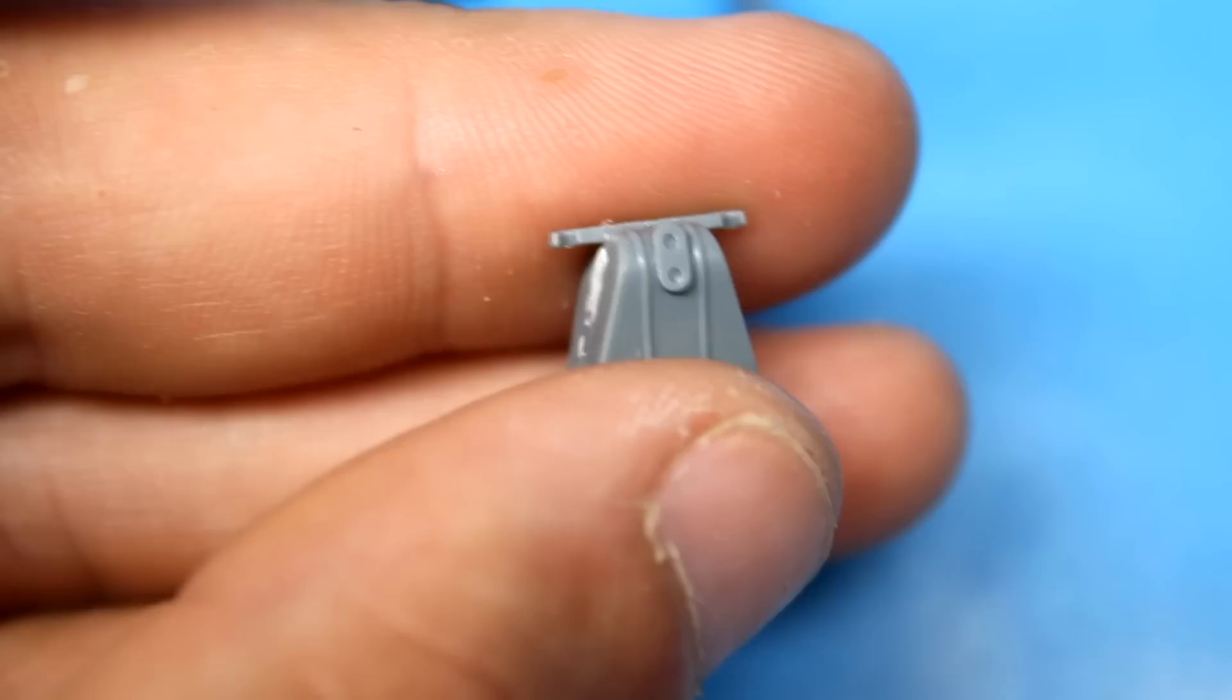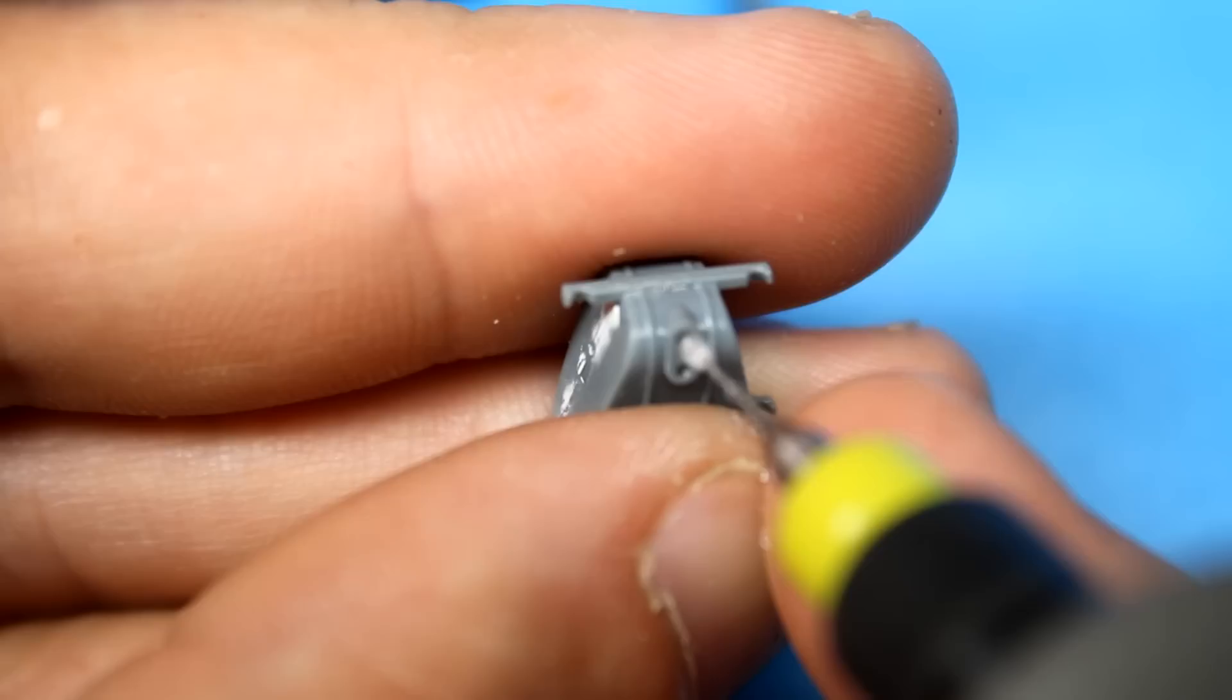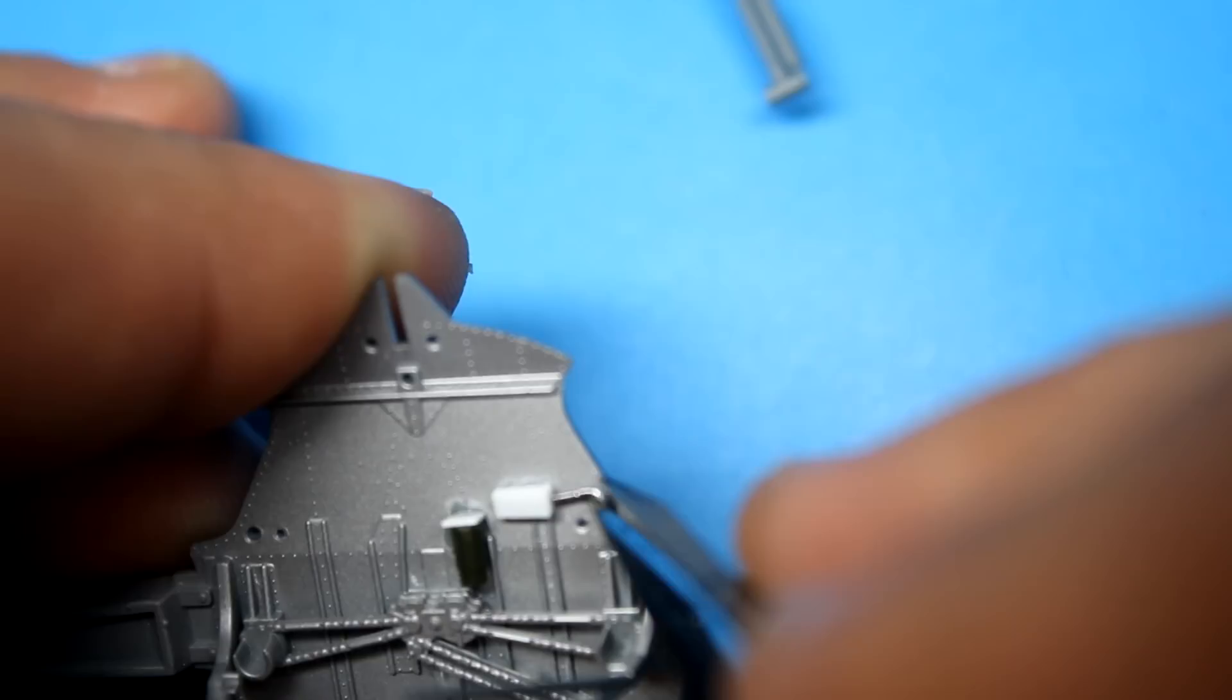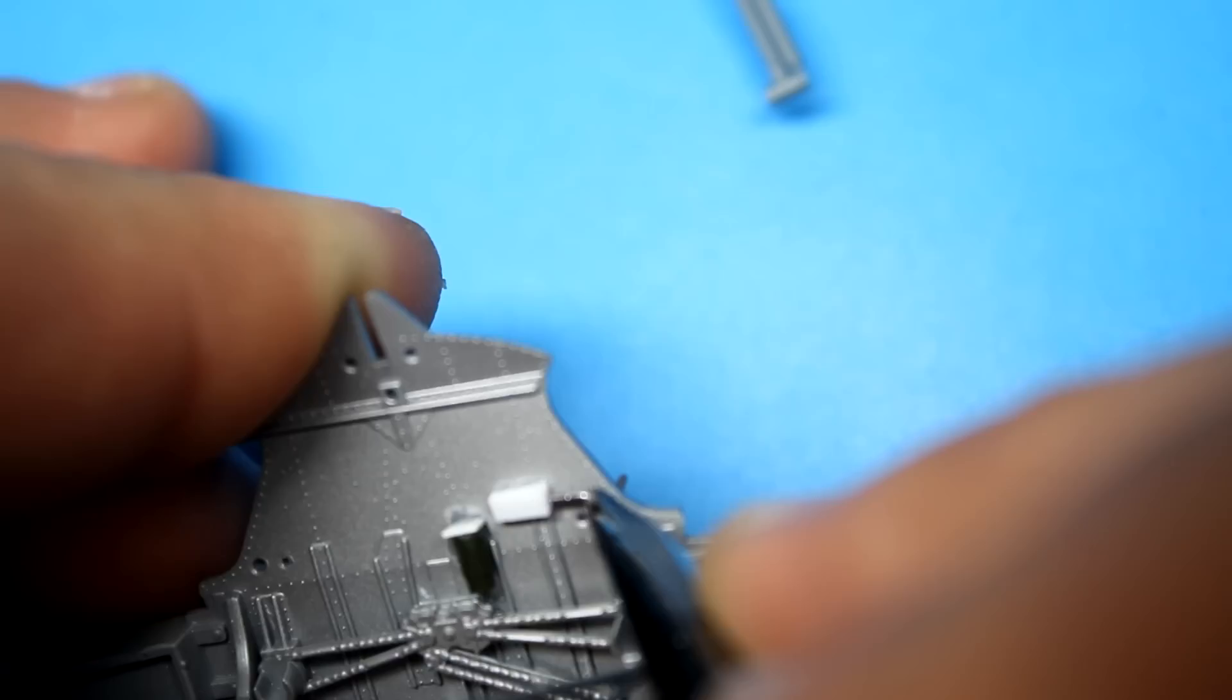Now to busy up the gear bay I've decided to add some parts of sprue and some lead wire just to give the impression that there's some hydraulic motors and pumps in place. Now this isn't a wire for wire hose for hose replica of what's going on in the Wildcat gear bay, but just enough to give you an idea that it's a busy place to live.